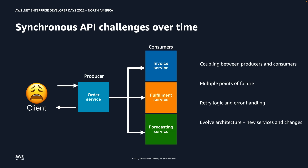The retry logic could differ based on the quality of service and the architecture for each downstream service, making the order service increasingly complex beyond its core business logic. And finally, with this tight coupling, it makes it difficult to evolve the architecture. If we decide to add a new service in the future, that will require a change to the order service. Any interface changes to downstream services also force changes to the order service.